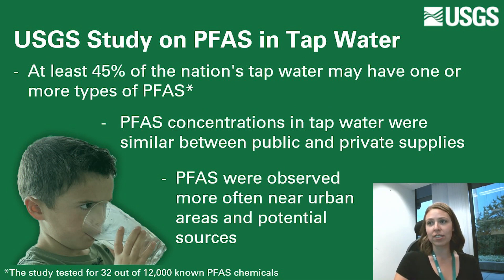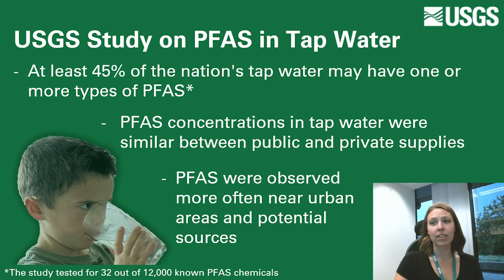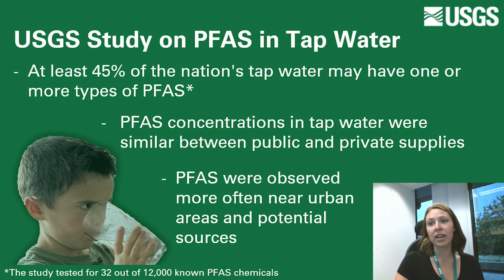A recent USGS study suggests that at least 45% of the nation's tap water may have one or more types of PFAS. This study also suggests that these chemicals are more likely to be detected near urban areas and PFAS sources like airports and wastewater sites.